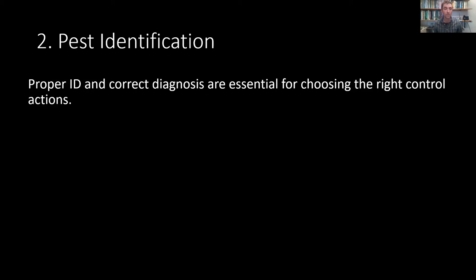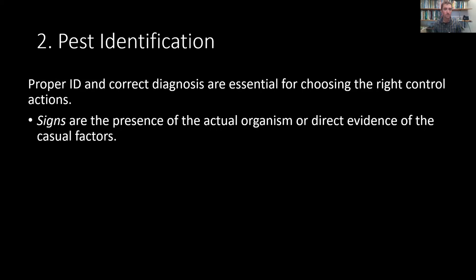With a proper identification, you get a diagnosis of a problem, and this is essential for choosing the right control actions. When we talk about identification, we talk about two things we're looking for. The first is signs — signs are the presence of the actual organism. You see it, or you detect direct evidence of the causal factor. For example, you see a rabbit in your garden, or you see droppings you can identify as rabbit droppings — that's a sign of rabbits.